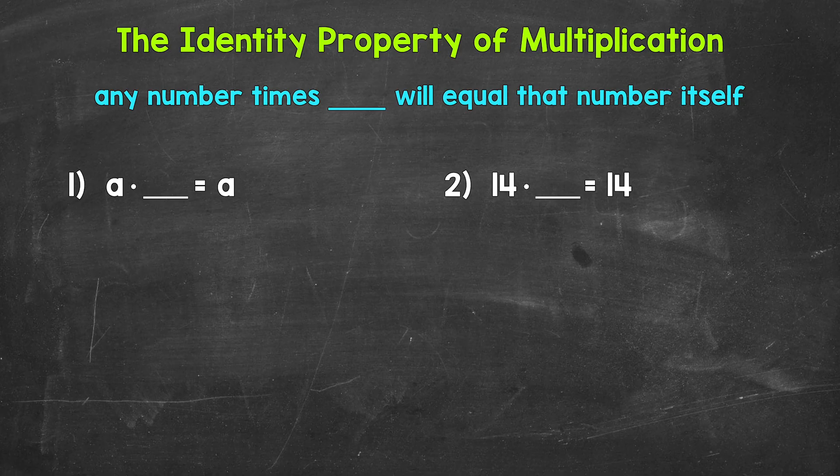Now, when it comes to the identity property, think of the word itself. Basically, we need to think, how do we get something to equal itself?